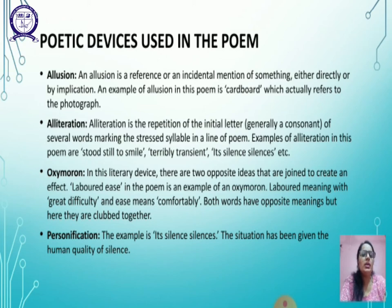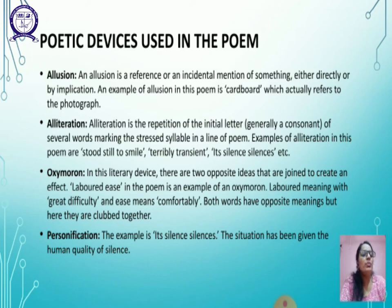Oxymoron: in this literary device, two opposite ideas are joined to create an effect. 'Laboured ease' in the poem is an example of an oxymoron — 'laboured' meaning with great difficulty and 'ease' meaning comfortably. Both words have opposite meanings but are clubbed together. Personification: the example is 'its silence silences' — the situation has been given the human quality of silence.